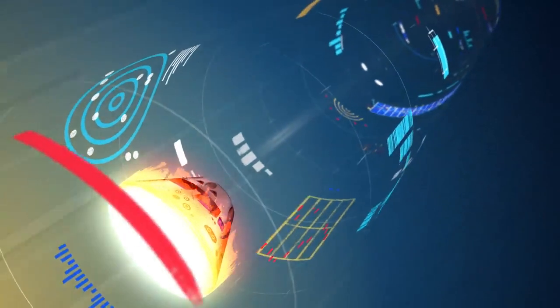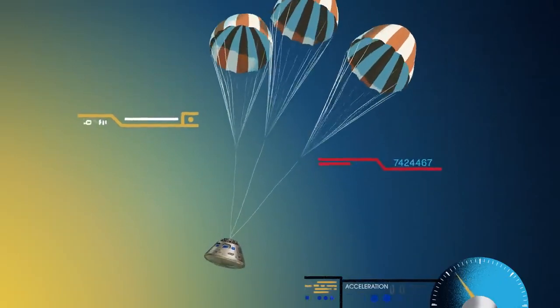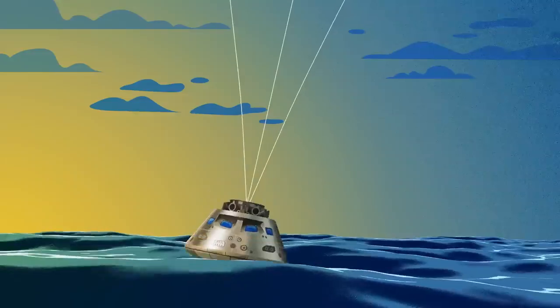With the Orion now at just 300 miles per hour, a series of parachutes uniquely tested and produced for this moment deploy, decelerating the craft to just 20 miles per hour for splashdown.